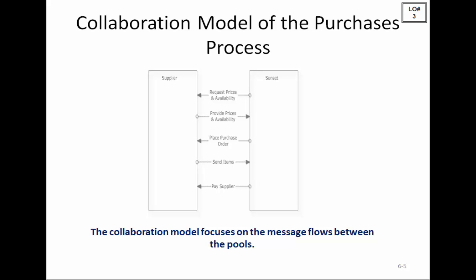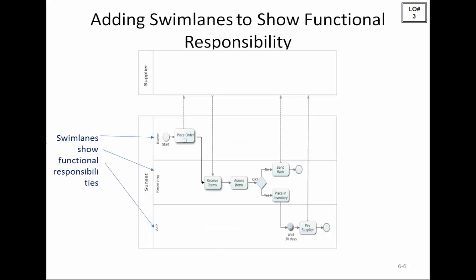Now we have a collaboration model of the purchases process where the supplier and Sunset Graphics are shown in two pools, but none of the activities in the pools are modeled — we're focusing on the message flow between pools. Sunset first requests prices and availability, the supplier responds with prices and availability, Sunset places the purchase order, the supplier sends the items, and Sunset pays the supplier.